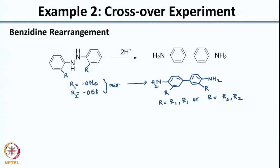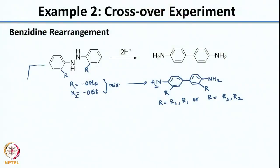Here again you have an example where it goes via an intramolecular rearrangement and not a fragmentation. Can you try to write the mechanism for this reaction? The first step would be protonation. You have the lone pairs on the nitrogen, so it will protonate there. I will write it in a different fashion to make it easier to visualize the mechanism.